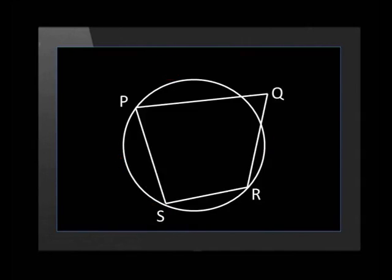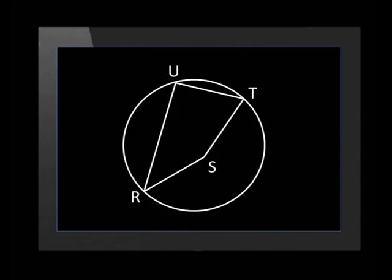This quadrilateral is not cyclic as vertex Q is not on the circumference of the circle. And neither is this one, as vertex S is not on the circumference of the circle. We switch over to John to take us through the proof of the first theorem relating to cyclic quads.